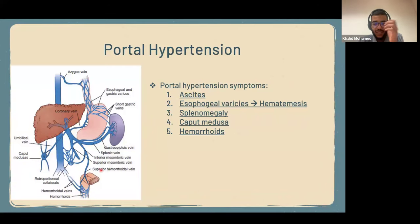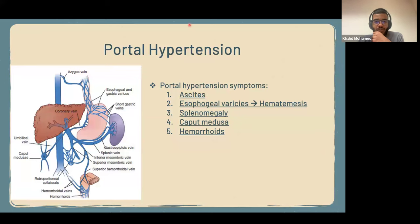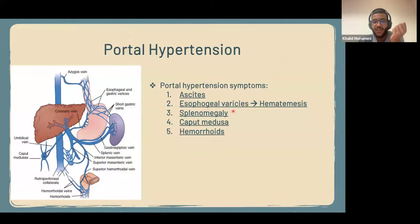Another anastomosis is around the rectal area. If these veins dilate, we call them hemorrhoids, and the patient may present with blood in feces. Finally, because the spleen is one of the major contributors to the portal system, if there's hypertension in the portal system, blood will back up into the spleen causing splenomegaly. So the five main symptoms of portal hypertension are: ascites, esophageal varices causing hematemesis, splenomegaly, caput medusae, and hemorrhoids.